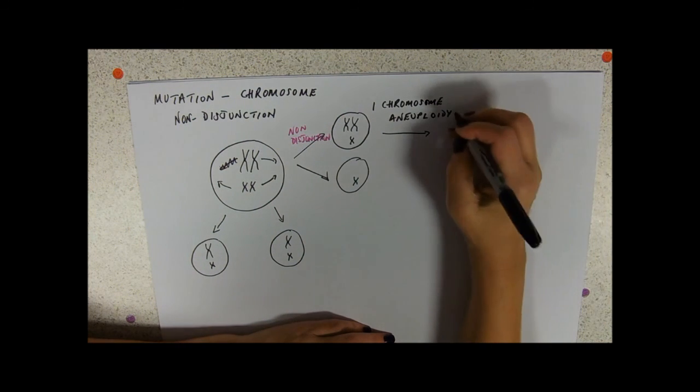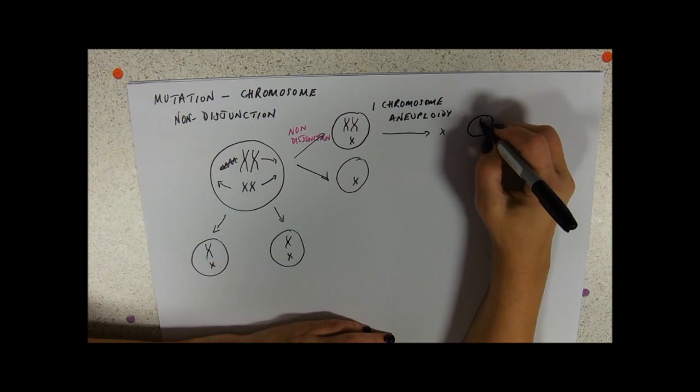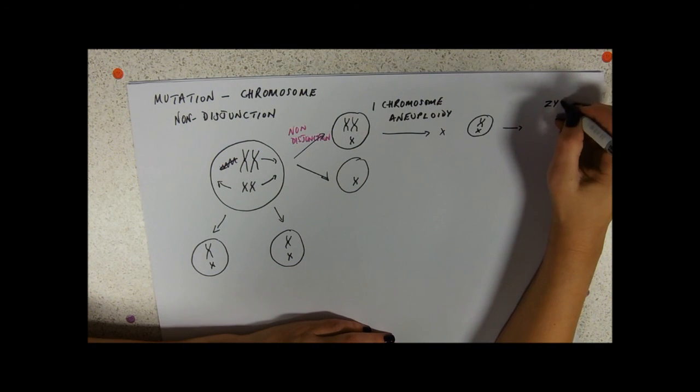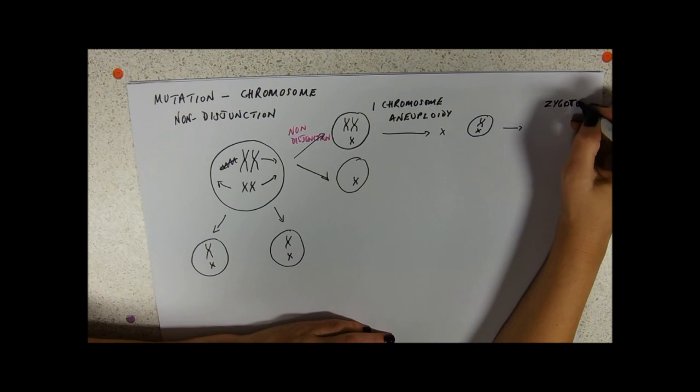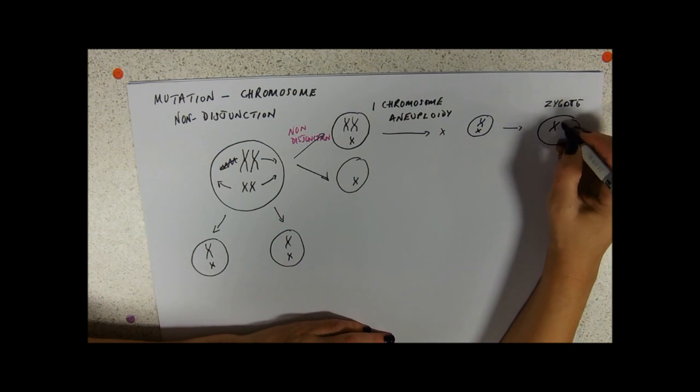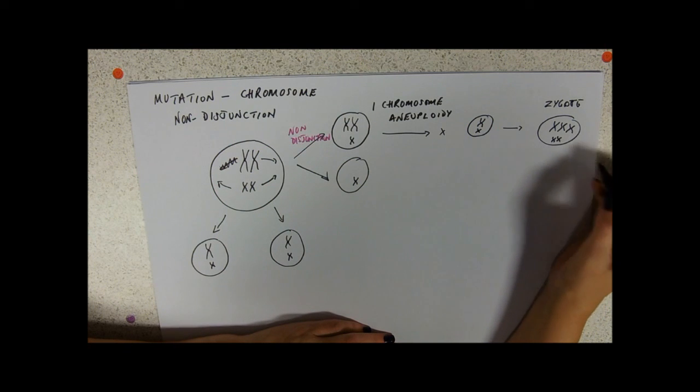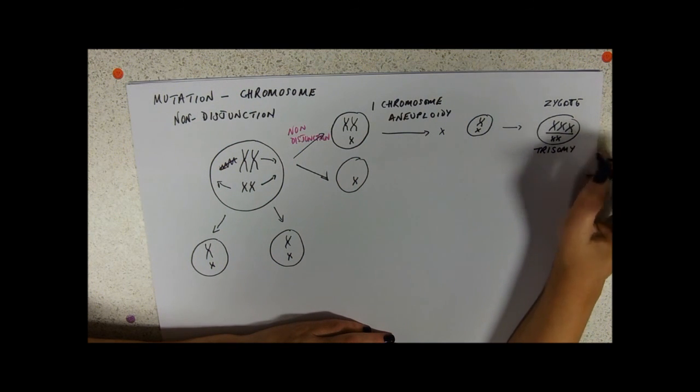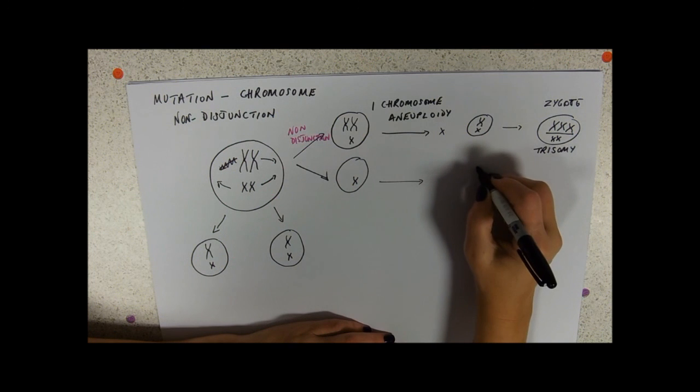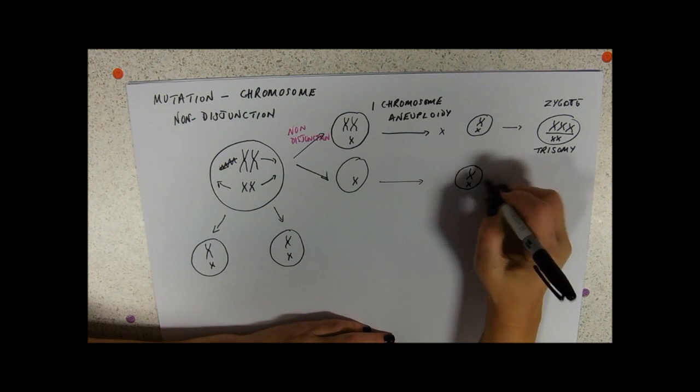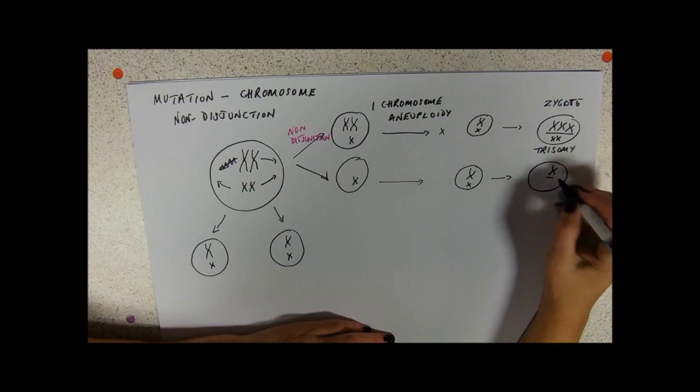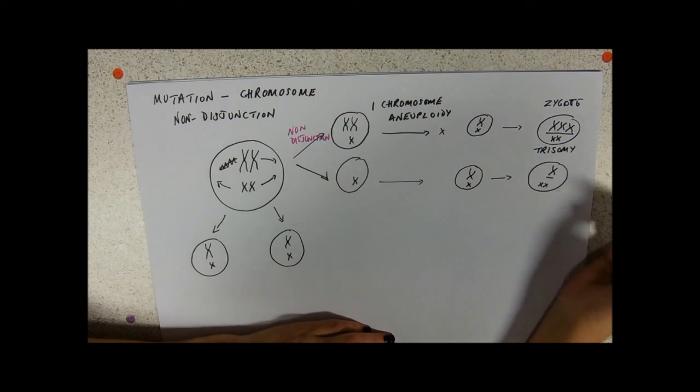If that gets fertilized with another cell that has its normal complement of chromosomes, what you end up with in the zygote is three copies of one chromosome and two of the other. Having three copies is called trisomy.